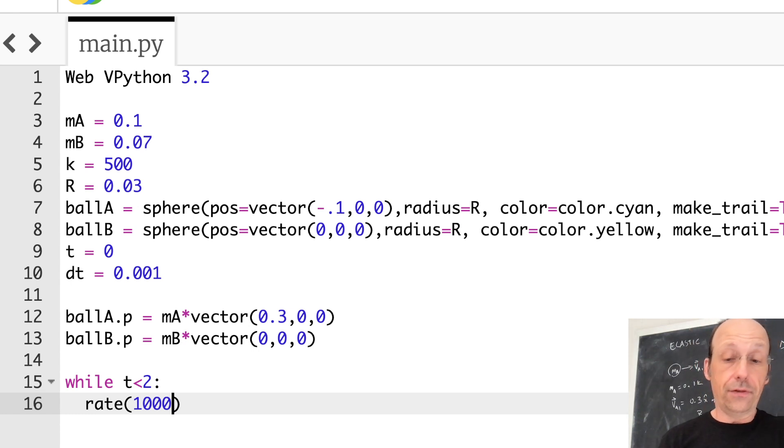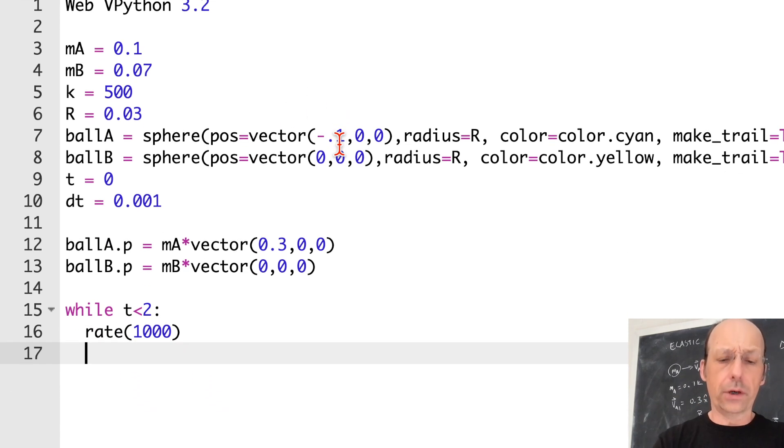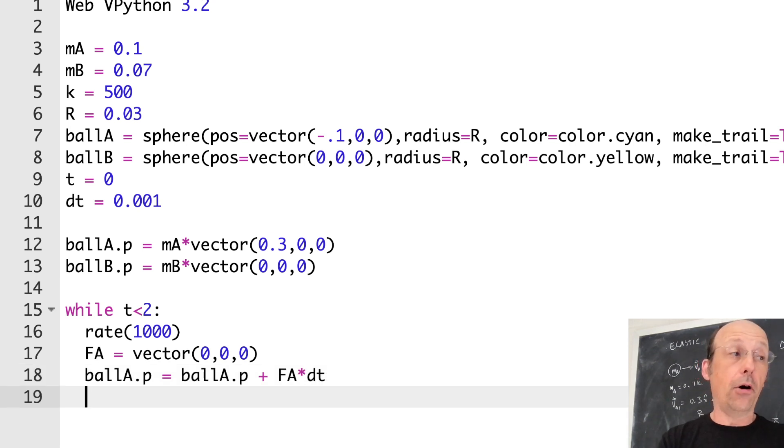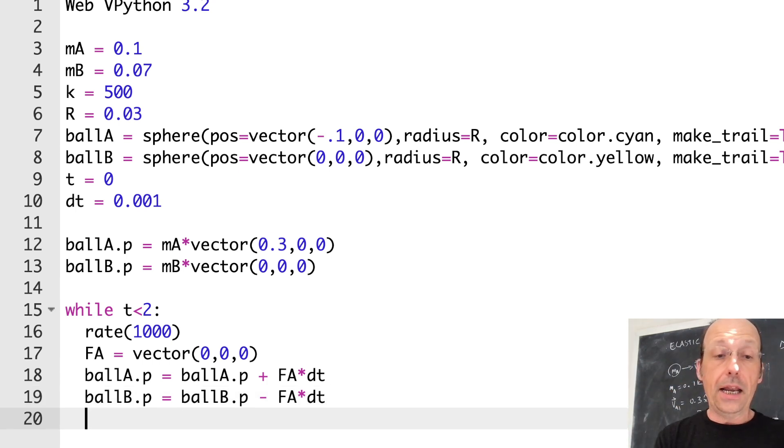So I'm just going to move these. That's all I'm going to do. So while T is less than, let's just run it for a certain amount of time. Let's run it for two seconds. Rate 1,000. So it's going to run in real time because I'm going to do 1,000 calculations per second at 1,000th of a second time step. So number one, I'm going to calculate the force even though it's 0. So I'm going to say F A is going to be the vector 0, 0, 0. Now I'm going to update the momentum for both objects. So ball A dot P equals ball A dot P plus F A times DT.